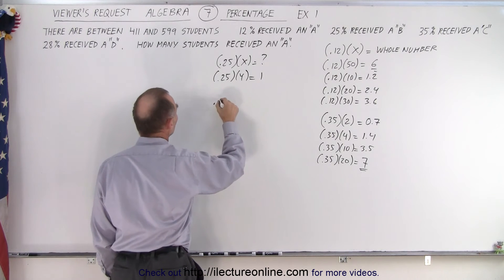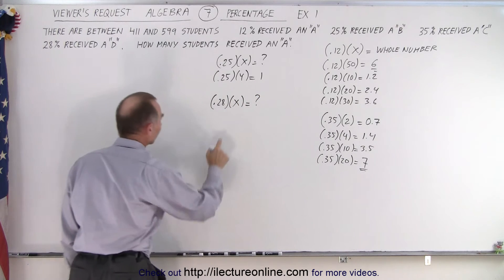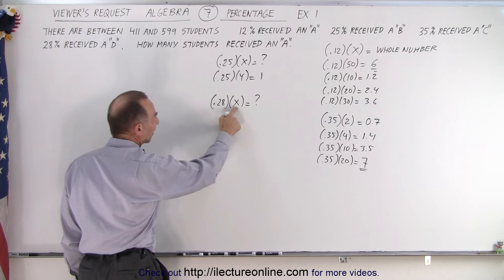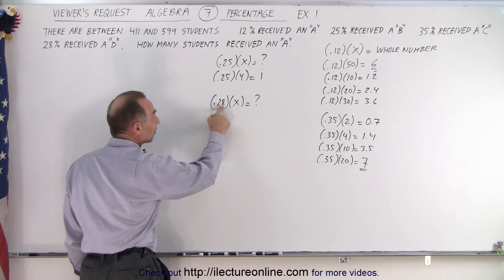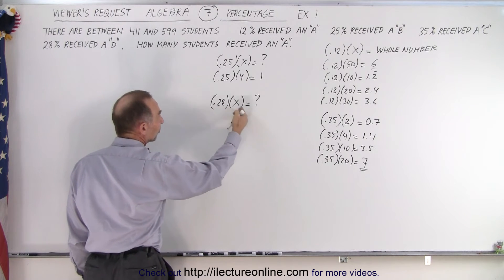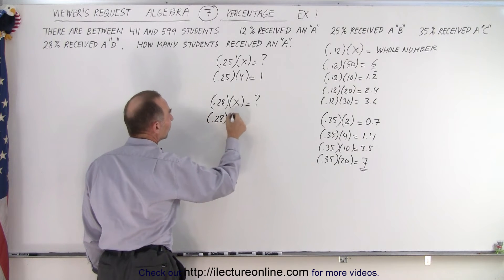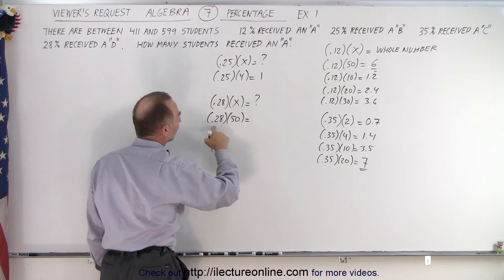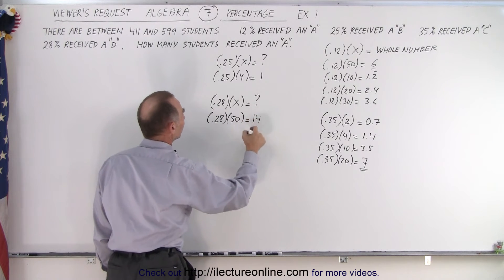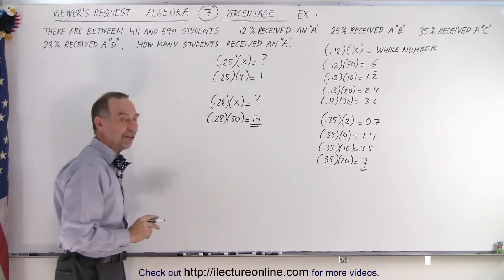And finally, 28. 0.28 multiplied times x gives me a whole number. What does x need to be? Notice that if x was 5, 5 times 8 gives me 40, that moves the decimal place over. And then I need another 10 to move the decimal place over a second point. So we get 0.28 times 50, which gives us 14. So again, we need a whole number if we multiply by at least 50.